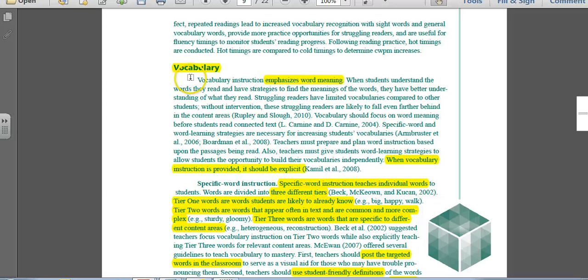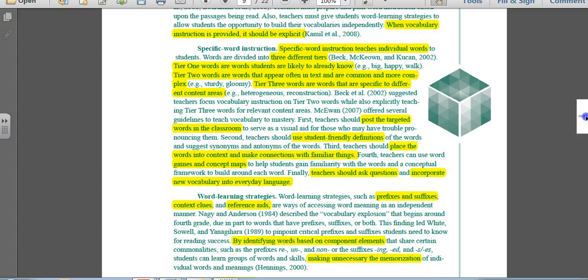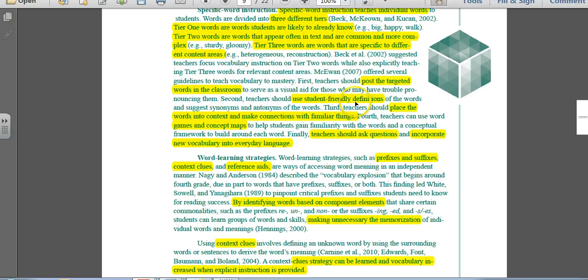Our next component is vocabulary. This is definitely a hot-button topic. We talk a lot about vocabulary in content area and adolescent literacy. Vocabulary instruction needs to be explicit, and this is one thing that is key that maybe we are missing sometimes. We are not giving the explicit instruction we need to be sure that students are really understanding words. Specific instruction includes three different tiers. Tier 1 is usually words that they already know. Tier 2 are words that often appear in text and are common, but they're more complex. And Tier 3 are more specific to content areas. We want to post the targeted words in the classroom, oftentimes through word walls or other methods to post them in the classroom. We want to use student-friendly definitions. We want to place the words in context and make connections with familiar things. We want to use games and concept maps to help them gain familiarity. And then teachers should ask questions and incorporate new vocabulary into everyday language.